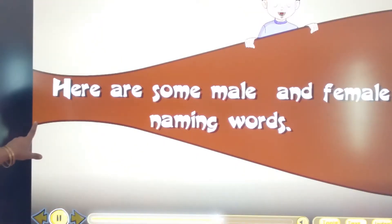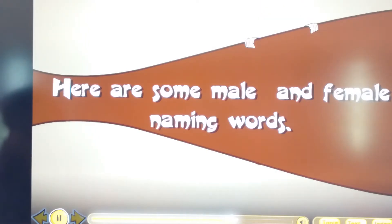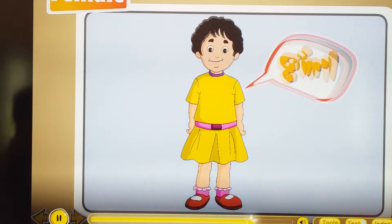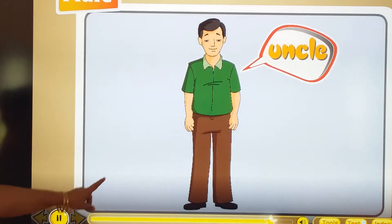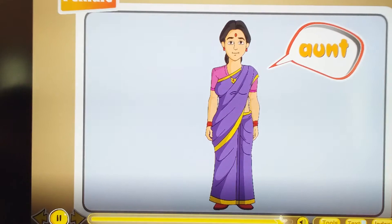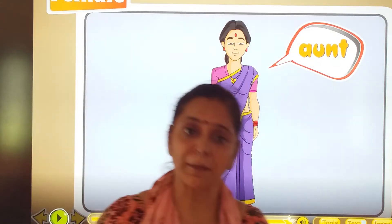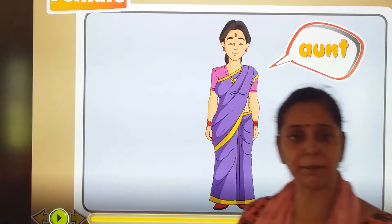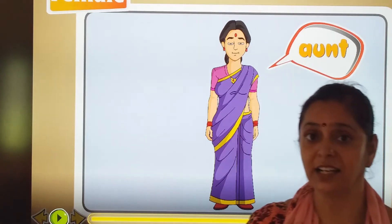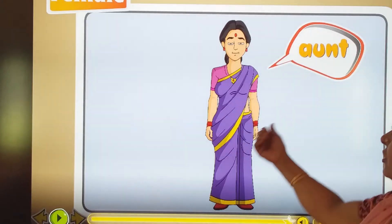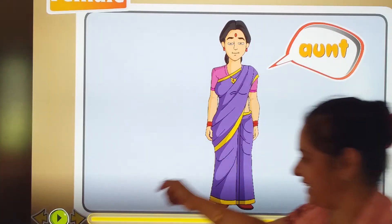Here are some male and female naming words. Boy is a male and girl is a female. Uncle is a male and aunt is a female.